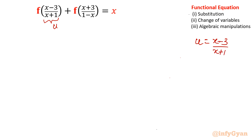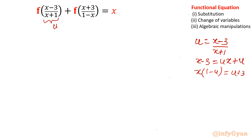Cross-multiplying, x minus 3 equals ux plus u. Taking x terms to one side: x times (1 minus u) equals u plus 3. So x equals (u plus 3) over (1 minus u).